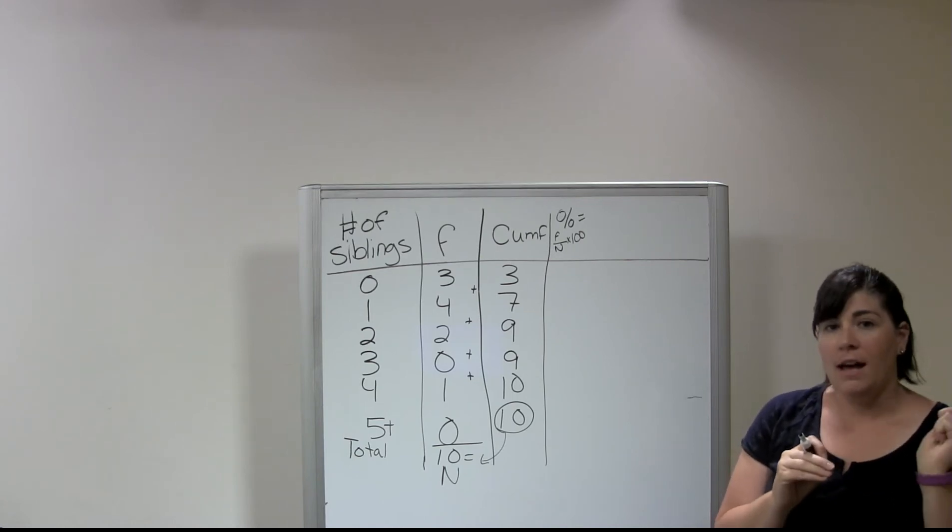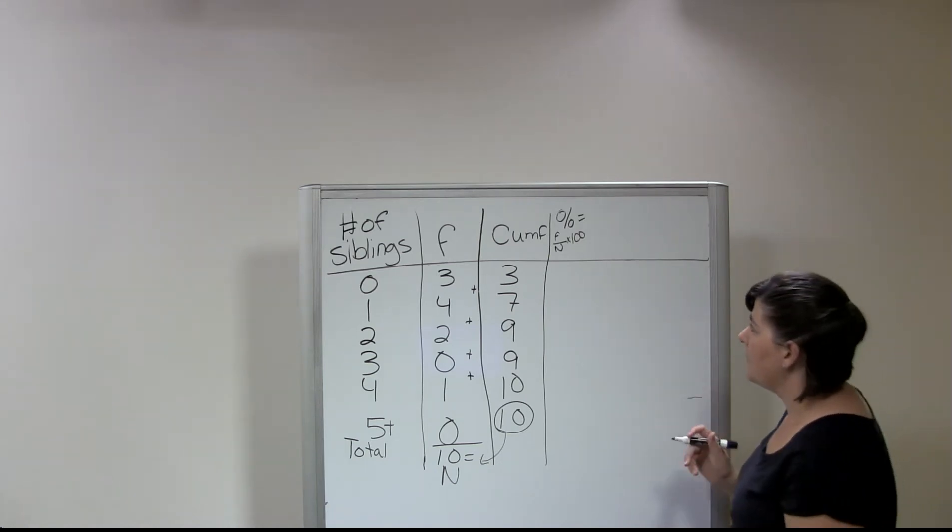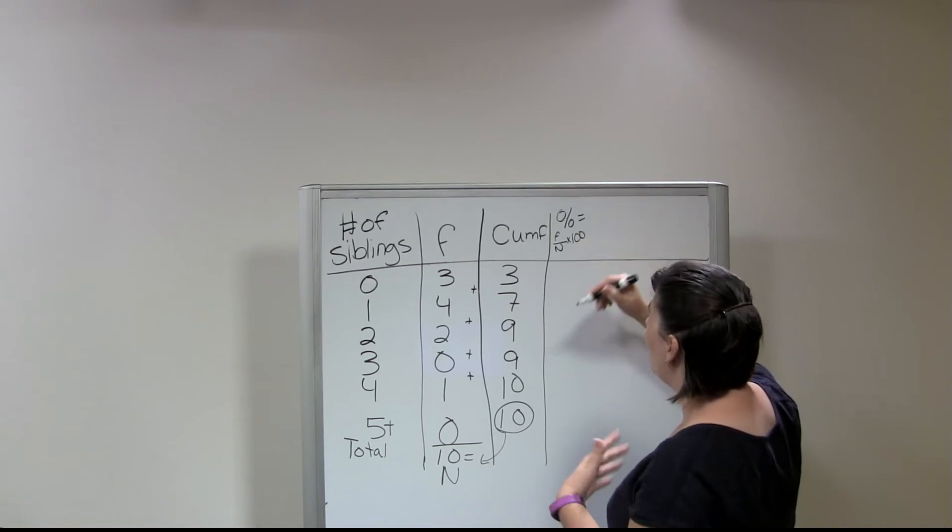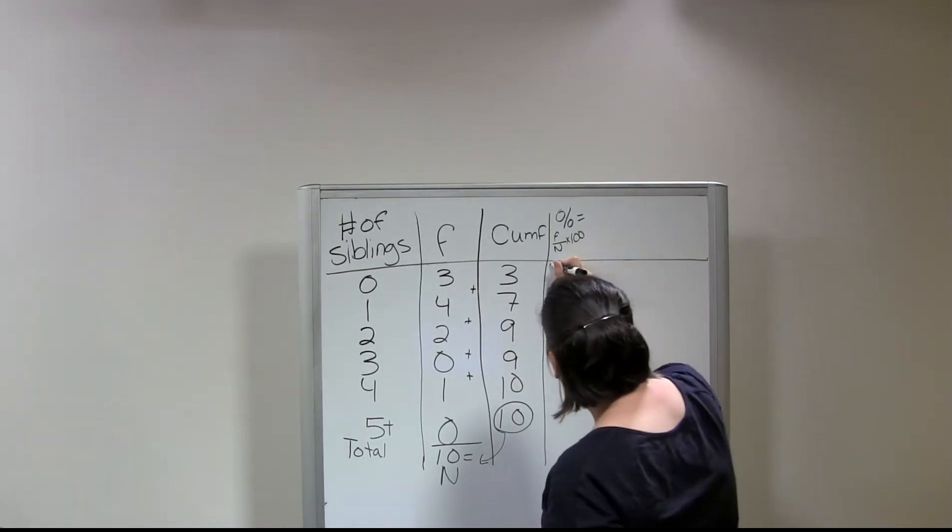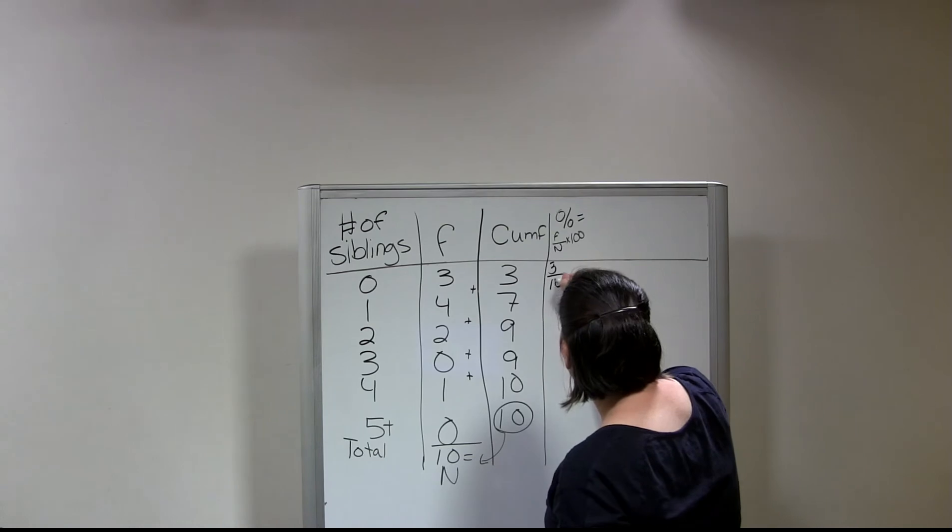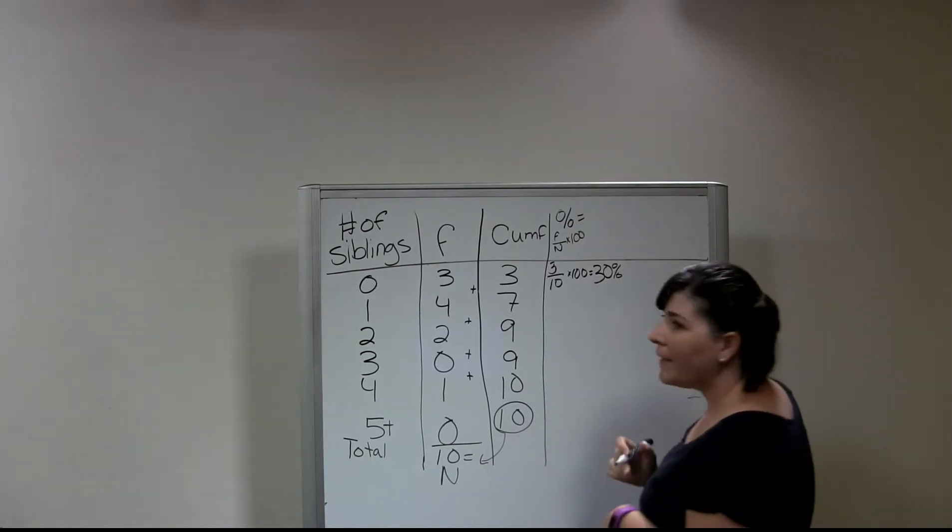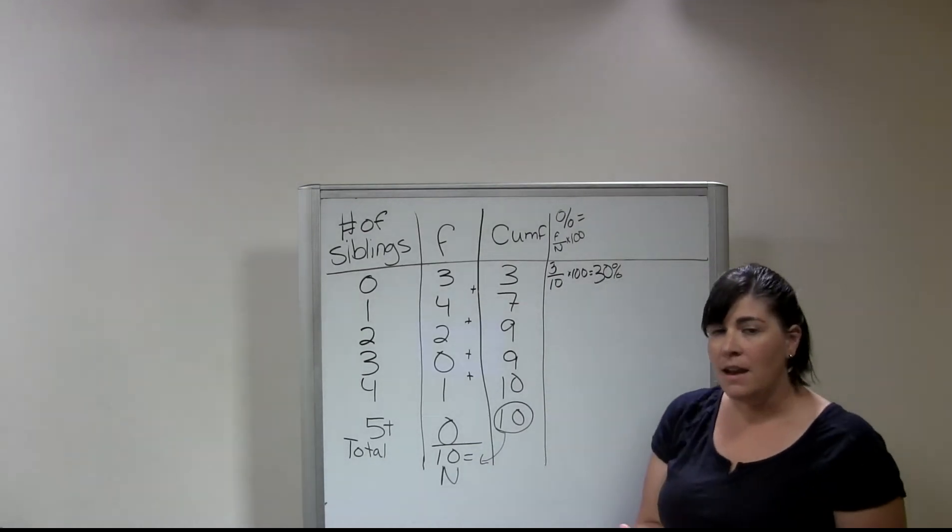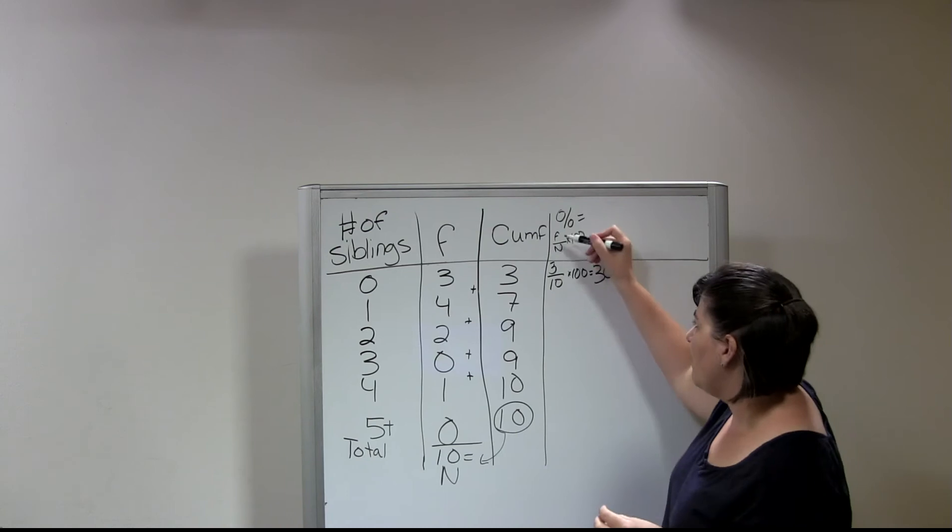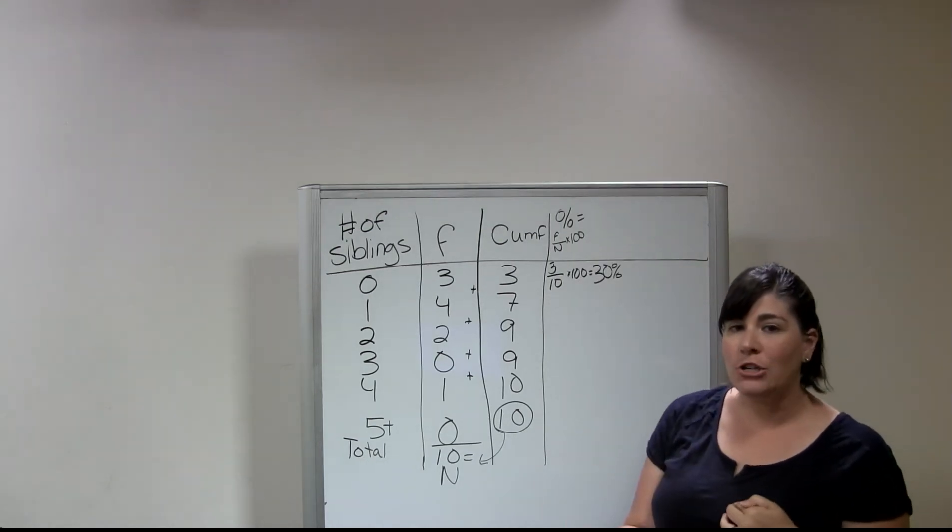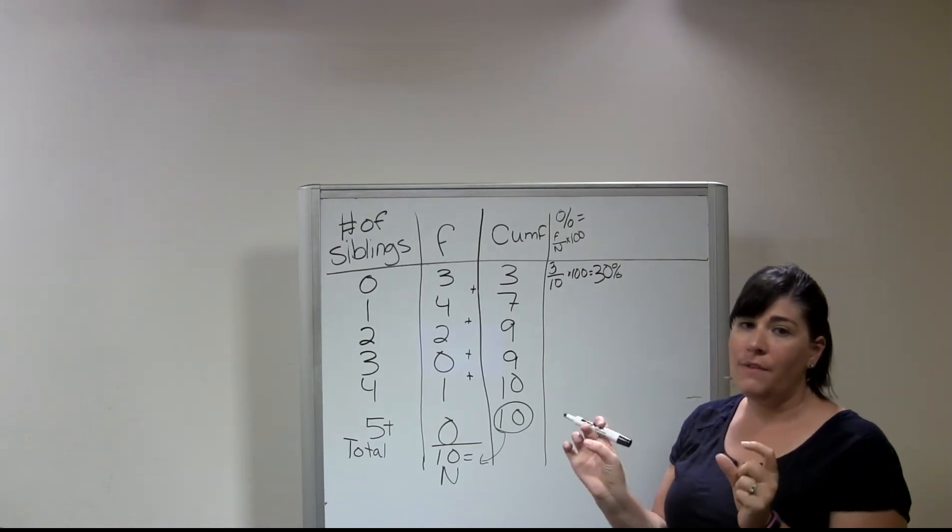So that's going to be our equation for a percentage. So for the first percentage, we're going to have 3 divided by 10 times 100, which is going to give us 30 percent. Now, we're getting nice even numbers because we have an N of 10, but if you were to have decimals, you would go to two decimal places. And so you would want to leave the F over N in your calculator until after you multiply it by 100. That way you can still have two decimal places even when it's a percentage.